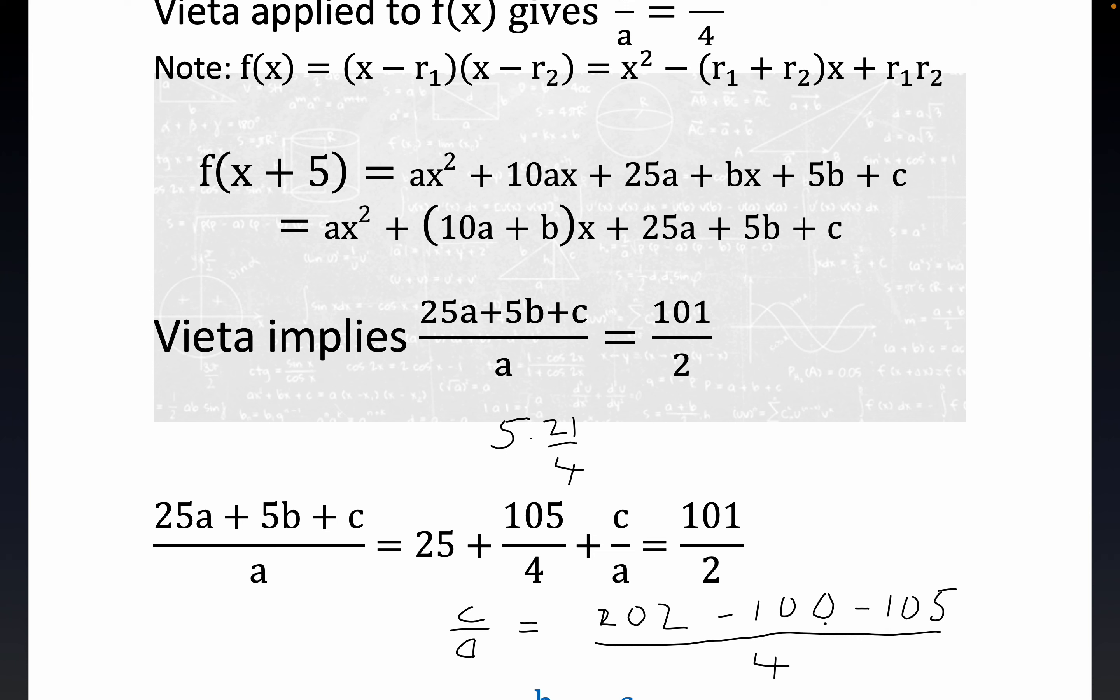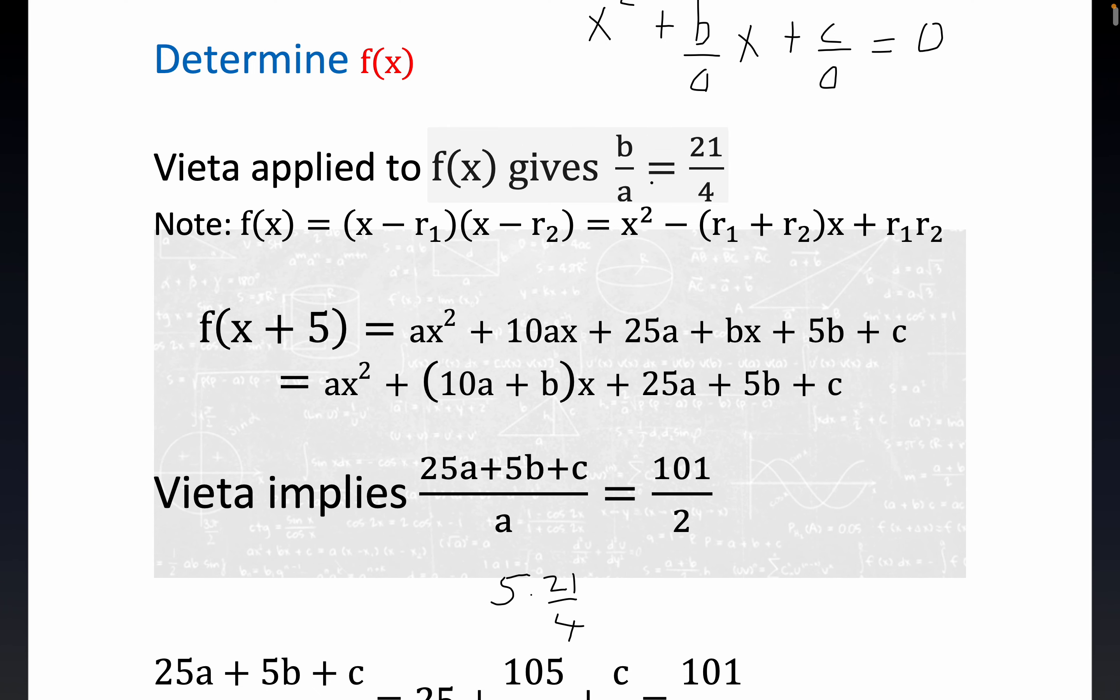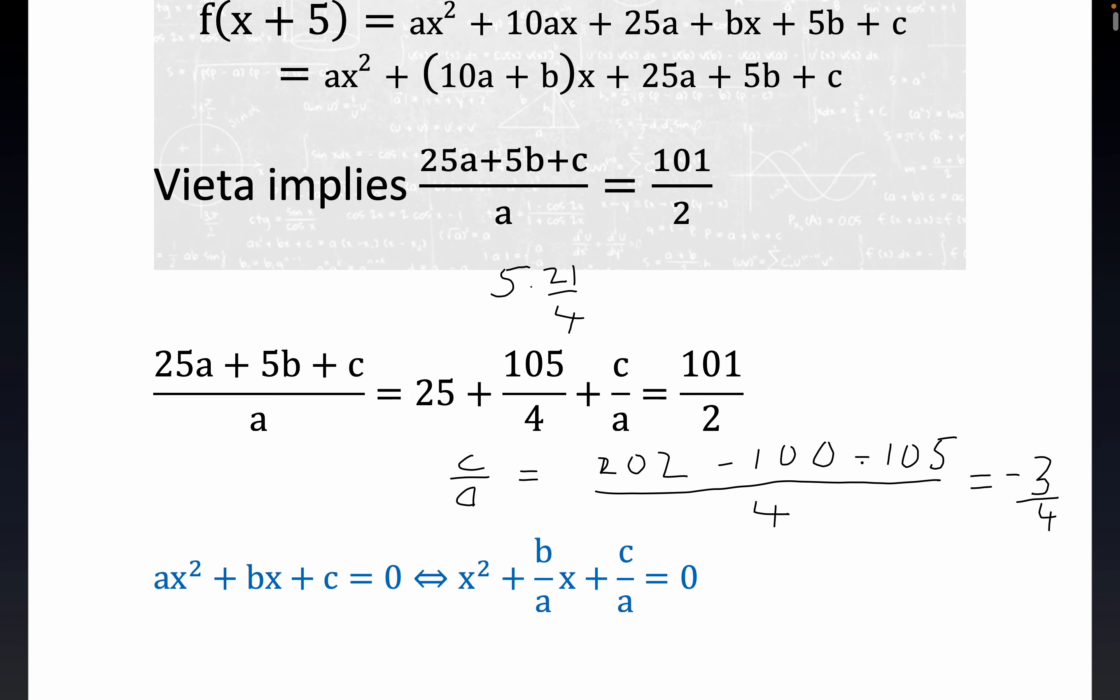So it looks like this is equal to minus three over four is what I'm getting. Minus three over four is what C over A is. So you see, we're in really good shape here because we know B over A was given to us notwithstanding the sign.